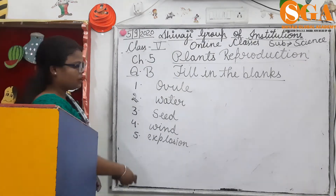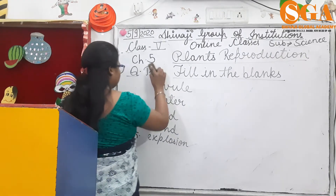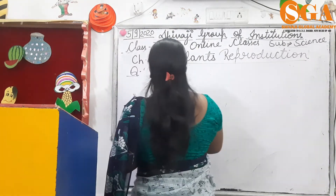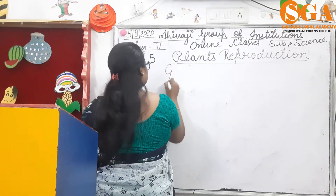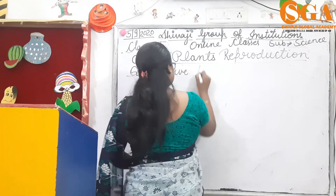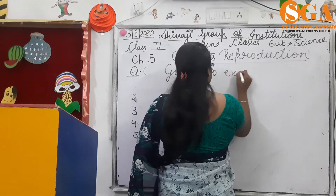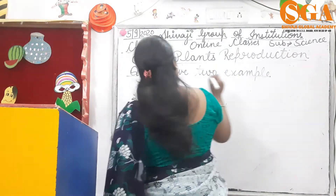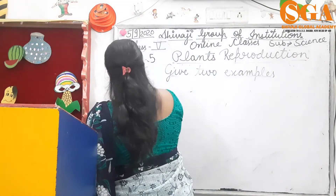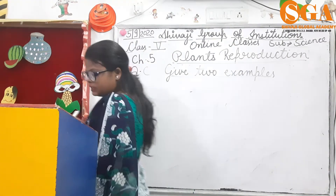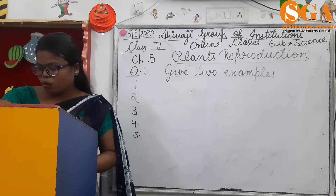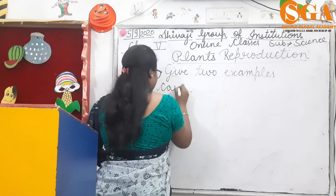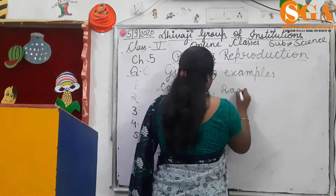Part C: give two examples for each question. First: plants that can be grown from root. Which plant is grown from root? Carrot and radish.